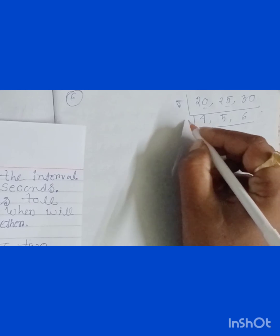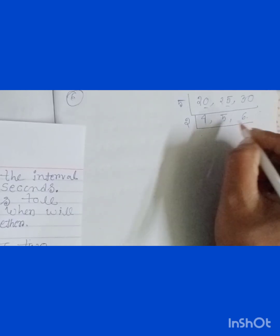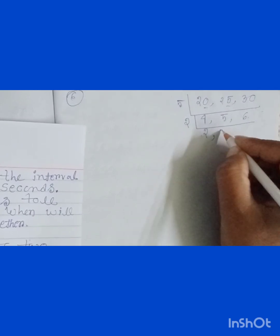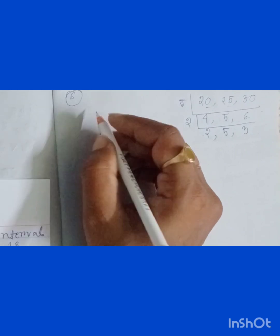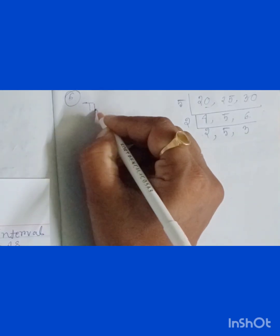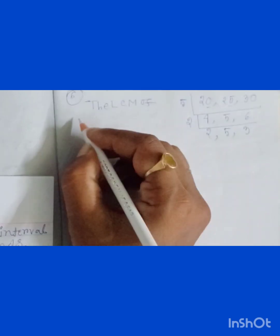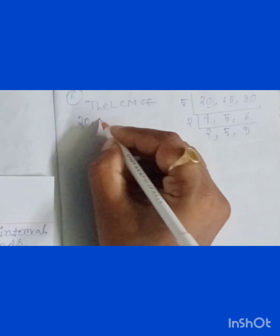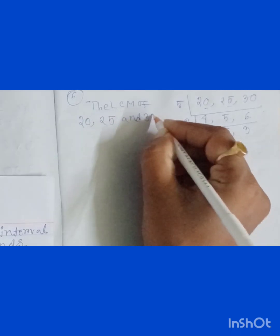Now I am taking 2 as a common factor because 4 and 6 are divisible by 2. So 2 times 2 is 4, 5 remains, and 2 times 3 is 6. Student, now I am writing the LCM of 20, 25, and 30 is...